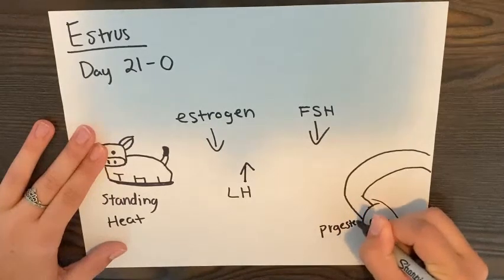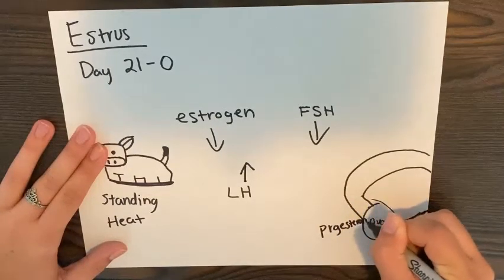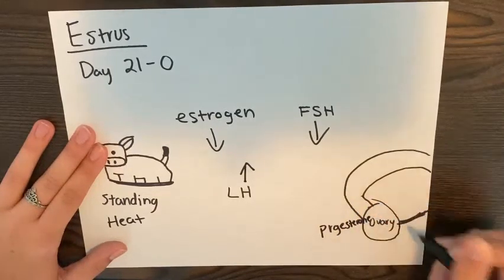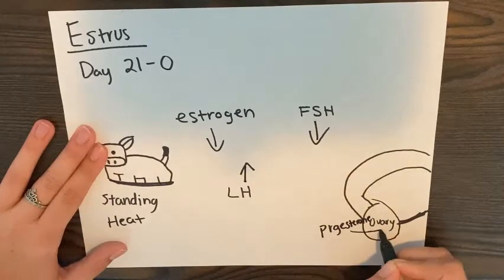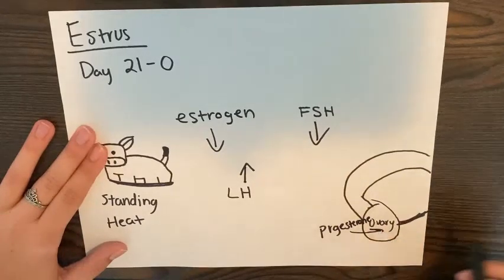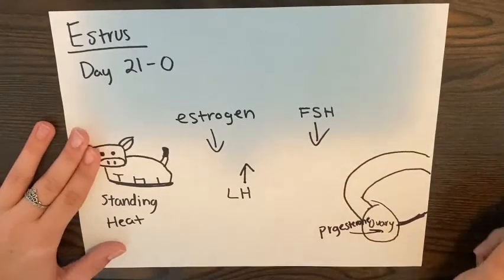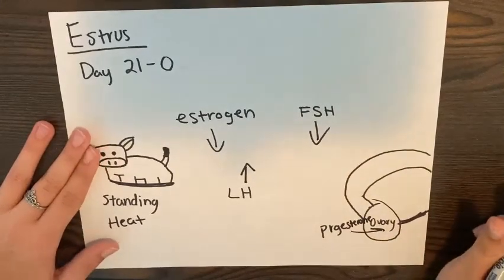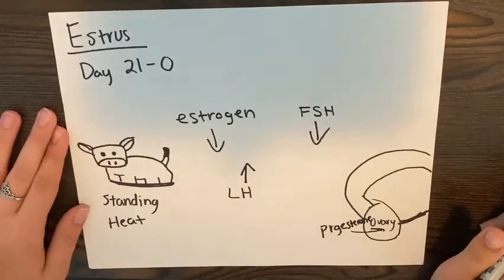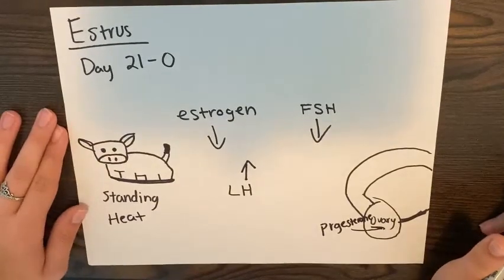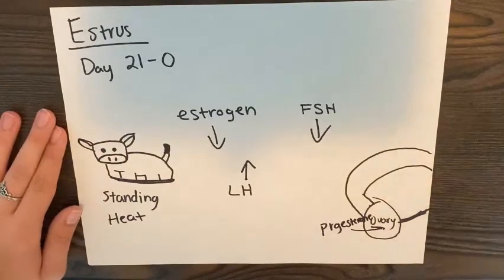The ovary starts producing progesterone, which inhibits LH and FSH release. Ovulation occurs 12 to 18 hours after the end of heat, but still occurs during estrus.